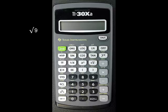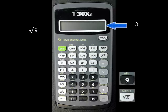To calculate the square root of 9, enter 9, then press the square root key. The answer 3 appears on the screen.